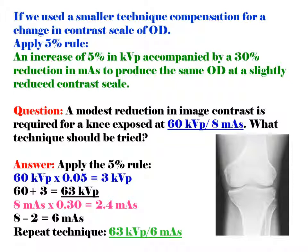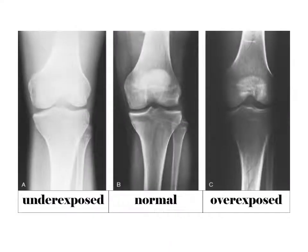The 15% rule and the 5% rule produce almost the same result in radiographic contrast and image, though the decrease is not proportionate. We have three sets of radiographs: A — underexposed, B — normal, C — overexposed. The normal result is achieved by applying either the 15% rule or the 5% rule as an adjustment.